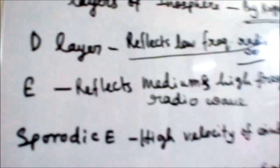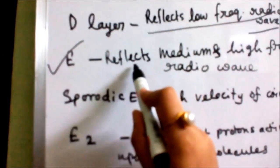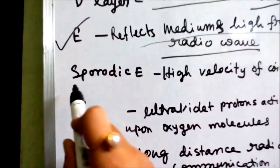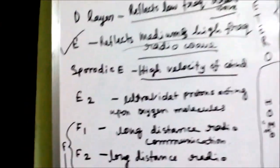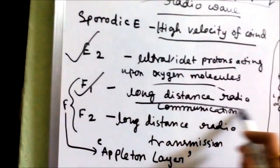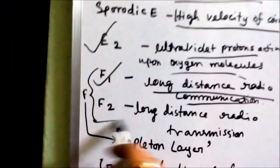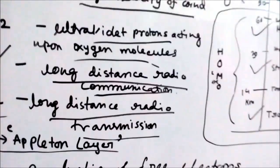The D layer reflects low frequency radio waves and absorbs high and medium frequency radio waves. The E layer reflects medium and high frequency radio waves. The sporadic E layer is known for its high velocity of wind. The E2 layer produces ultraviolet protons acting upon oxygen. The F1 layer is known for long distance radio communication, and the F2 layer is for long distance radio transmission. These two are collectively called the F layer, or upper Heaviside layer. The G layer is known for the production of free electrons and is also called the Heaviside layer.